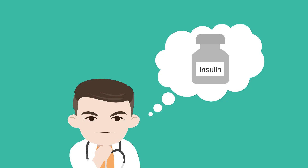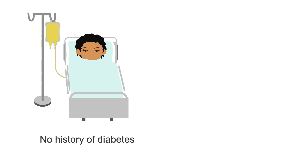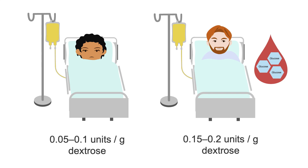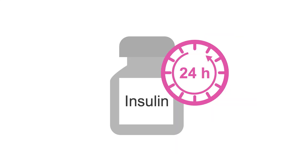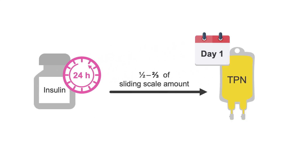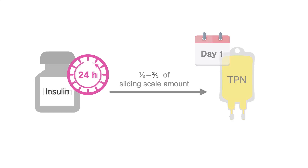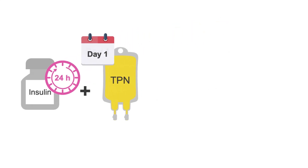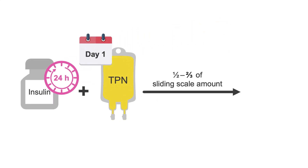To estimate a starting dose for patients with no history of diabetes, ASPEN recommends starting with 0.05 to 0.1 units of insulin per gram of dextrose. For patients with a history of diabetes and/or severe hyperglycemia, you can use a range of 0.15 to 0.2 units of insulin per gram of dextrose. Another way to estimate a starting point is to figure out your patient's regular sliding scale insulin requirements from the previous 24-hour period and start by adding half to two-thirds of this amount to your day one TPN.